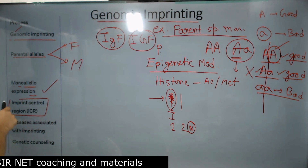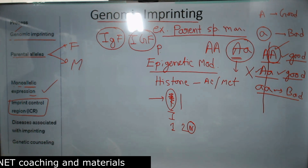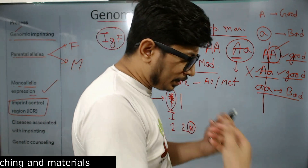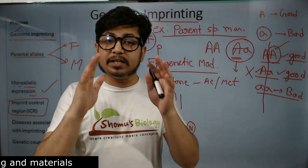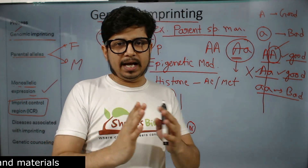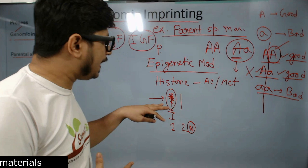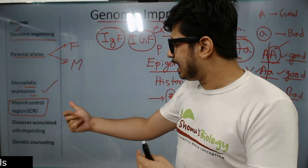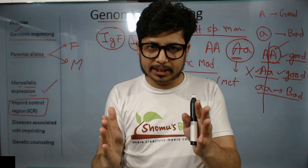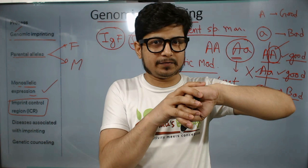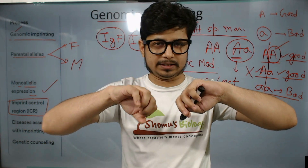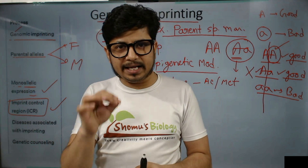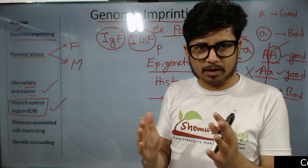Now how is this imprinting regulated? The imprint is controlled by a specific region in the chromosome known as the Imprint Control Region, or ICR. This imprint control region regulates and differentiates between the imprinted allele and the non-imprinted allele. The allele which is part of the highly modified chromosome will be imprinted. The ICR sets a boundary between the highly modified part and the less modified part of the gene, and actually regulates the process of genomic imprinting.